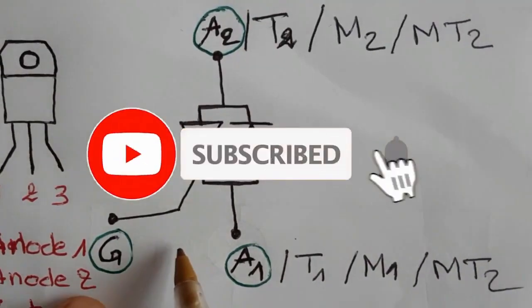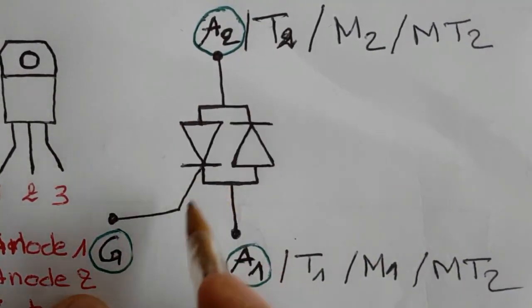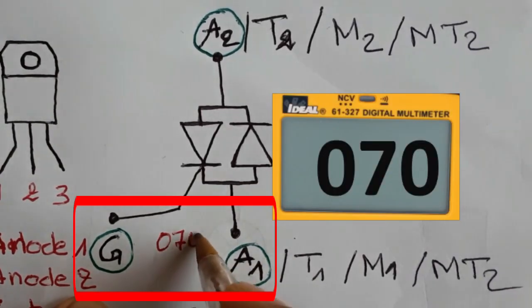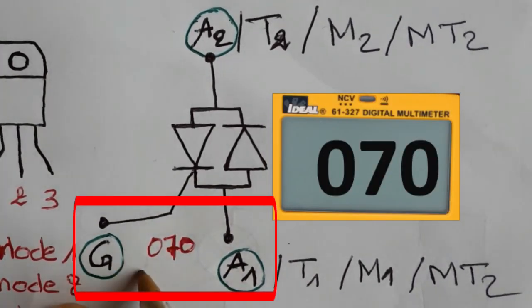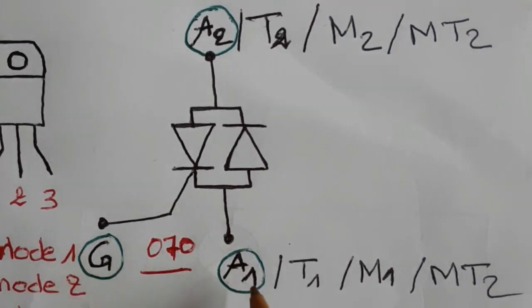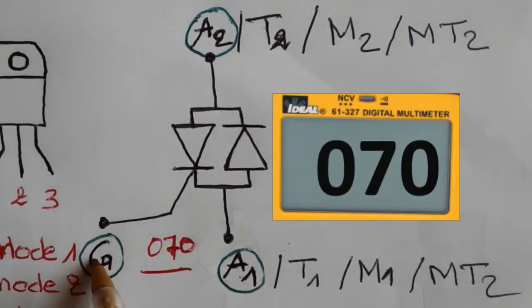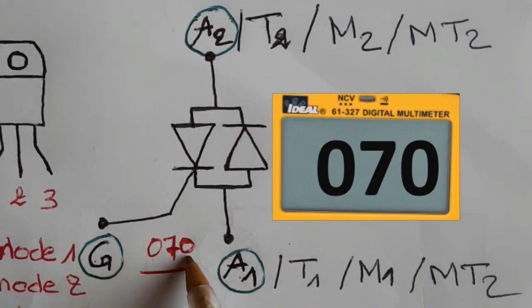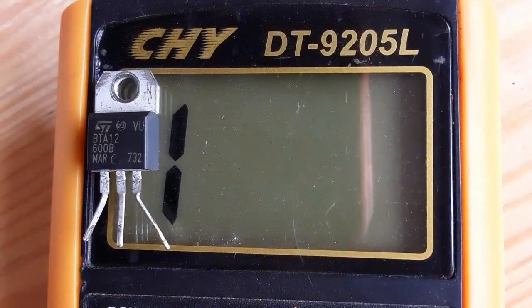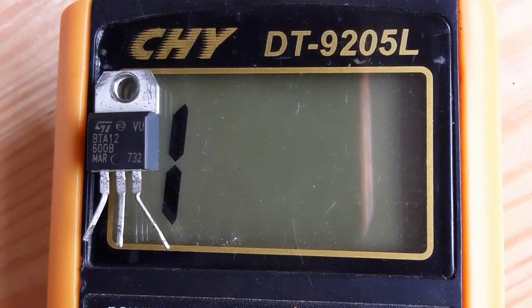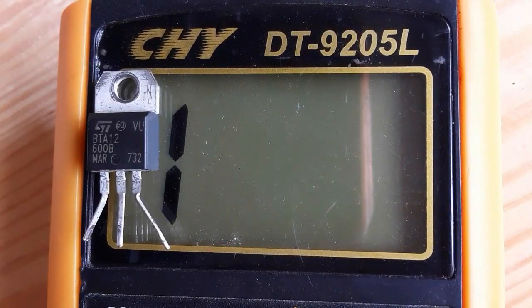Now, a good TRIAC is a TRIAC that shows 0.70 drop voltage between gate and anode 1. Between the anode 1 and the gate, you should get about 0.70 in the multimeter. So, let's check this TRIAC.